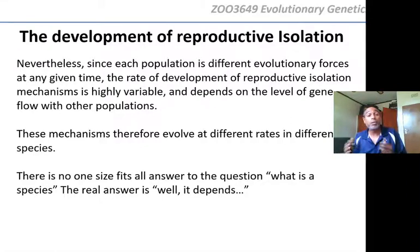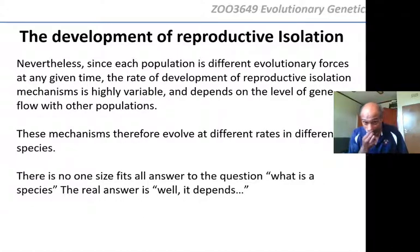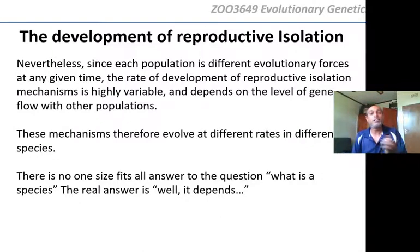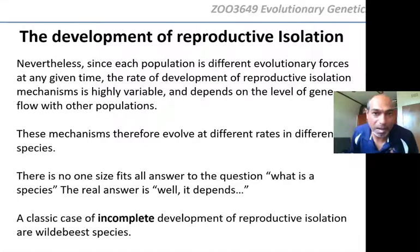Reproductive isolation depends on the level of gene flow, and because it is in different stages for every species — some complete, some incomplete — there is no definitive answer to the question 'what is a species.' The real answer is: it depends. A classical case of incomplete development of reproductive isolation is our wildebeest species in Africa.